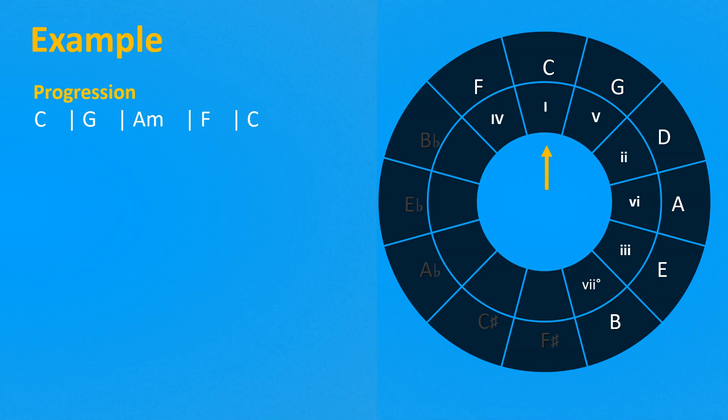Now let's finish the phrase with the progression 2-5-1: C, G, E minor, F, D minor 7, G7, C.